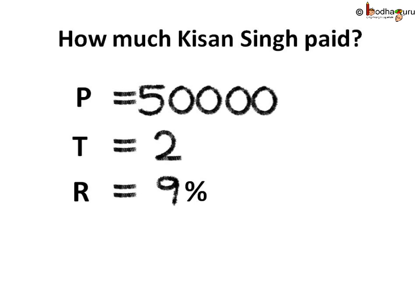Let us first try to find out how much interest he has to pay. We know the formula: interest is equal to principal multiplied by time multiplied by interest rate divided by 100. So, principal is 50,000, time to repay is 2 years, and rate of interest is 9% per annum.